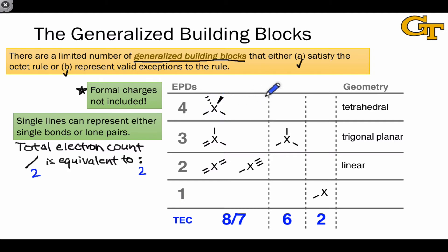It's convenient to classify the generalized building blocks according to the number of electron pair domains at the central atom. Four electron pair domains at the central atom gives rise to this tetrahedral building block, and this is the only way to achieve four electron pair domains in an organic structure.